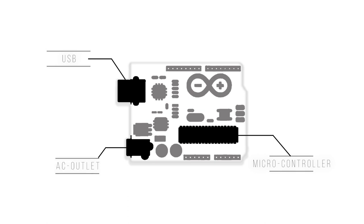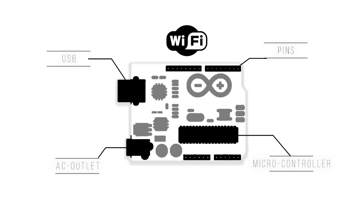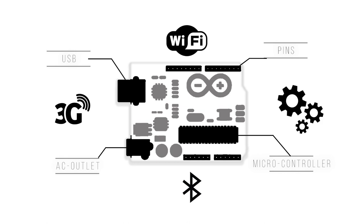Let's look at the Arduino a little bit more closely. The holes on the edge that you see over here are called pins. These modules make it possible to add really exciting features to the Arduino — anything from adding Wi-Fi capabilities or 3G capabilities, adding Bluetooth, adding shutter control, or being able to control motors. In short, the Arduino allows you to connect to everything around you.